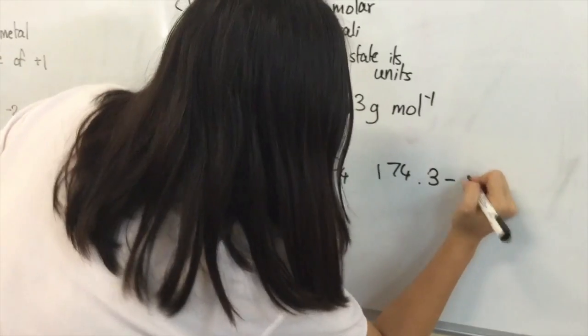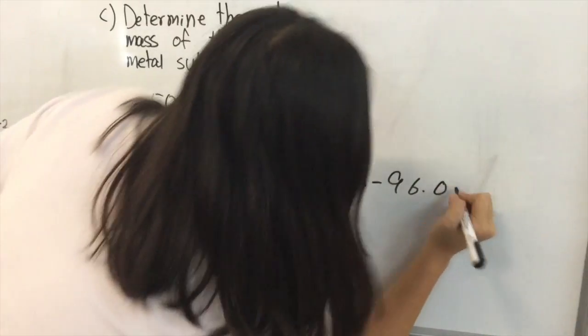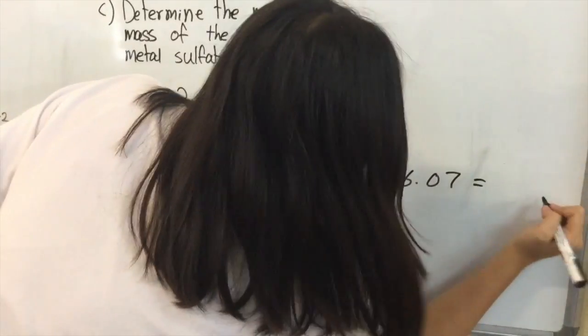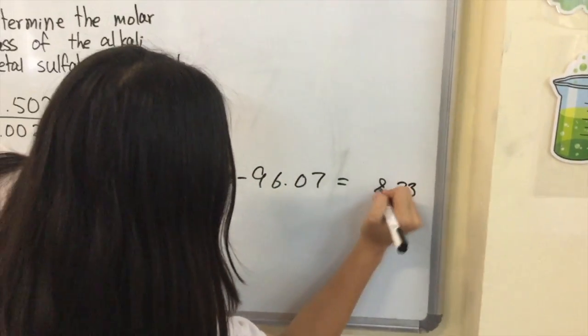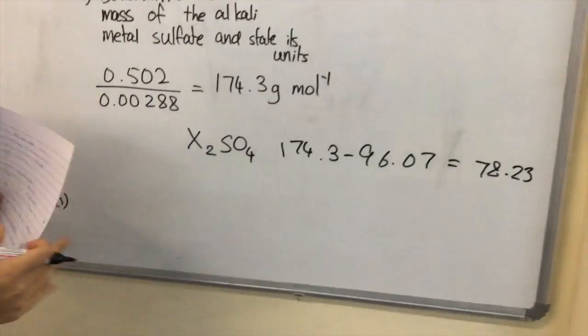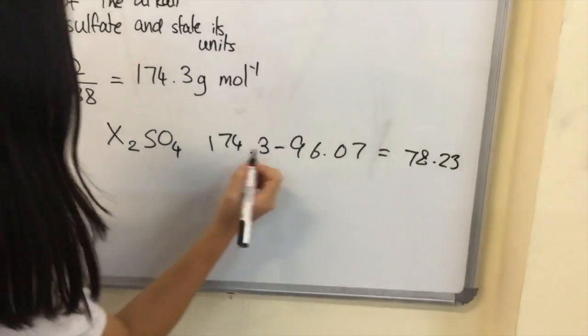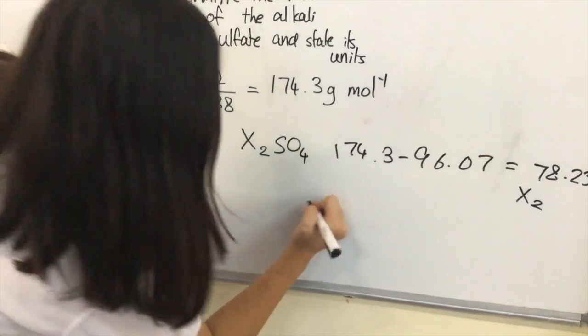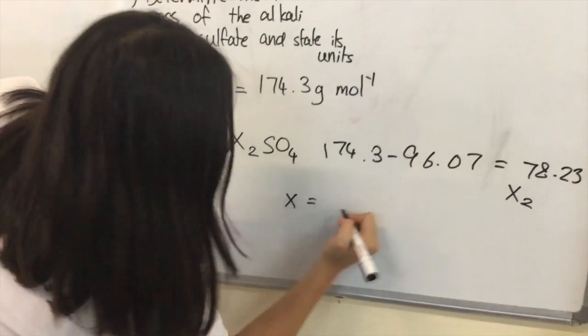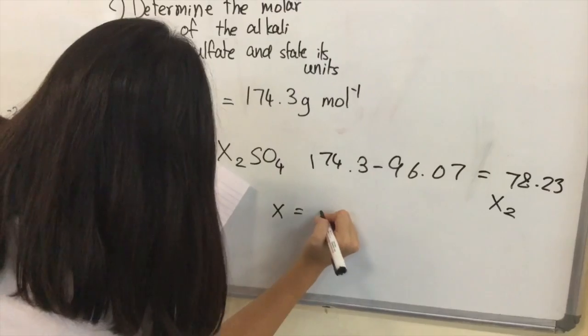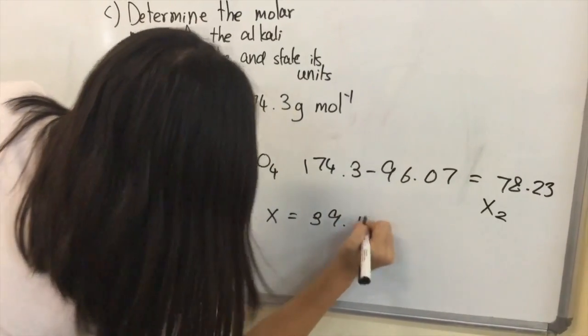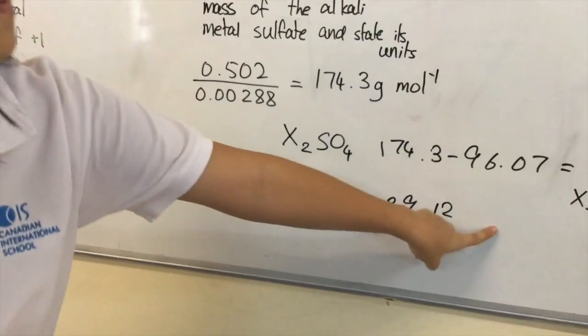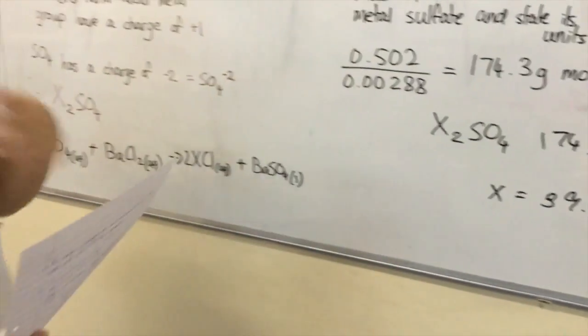174.3 minus 96.07 gives you 78.23. So that's for X2. For X will be half of that. X is 39.12. Let's search for it on the periodic table.